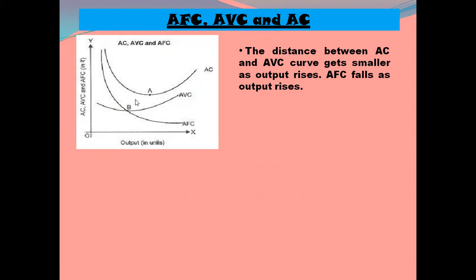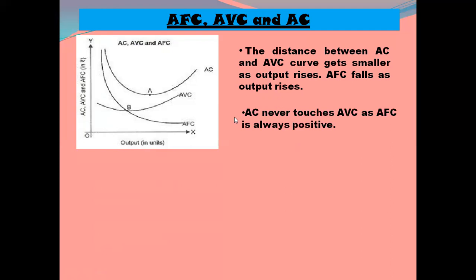The distance between the AC and AVC curves gets smaller as output rises, because AFC falls as output rises. This gap, which equals AFC, will decrease as output increases since AFC is falling at high levels of output. However, AFC is always positive, so even though the gap is decreasing, AC and AVC will never touch each other — because AFC is always positive, since TFC is always positive.